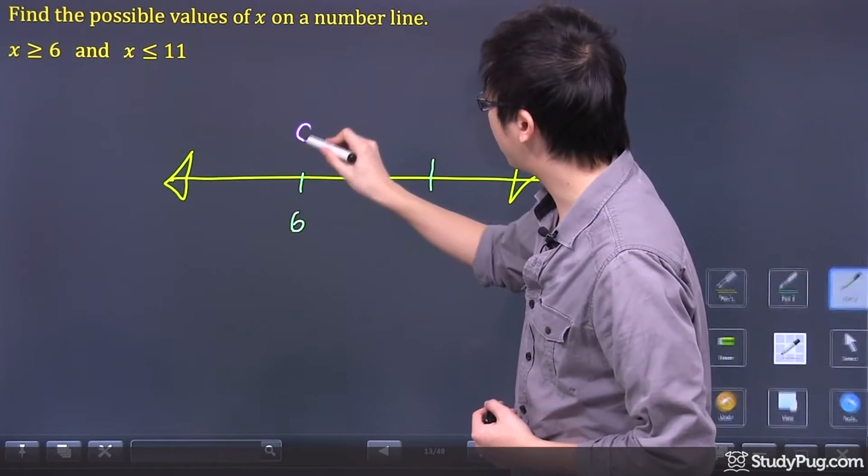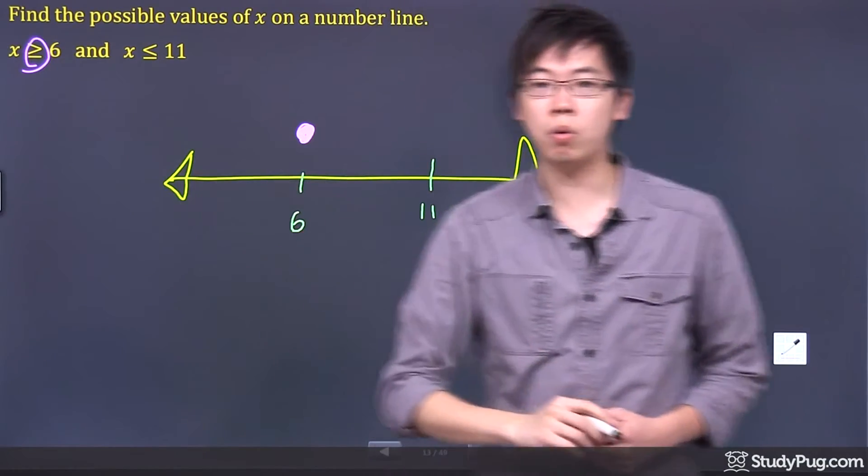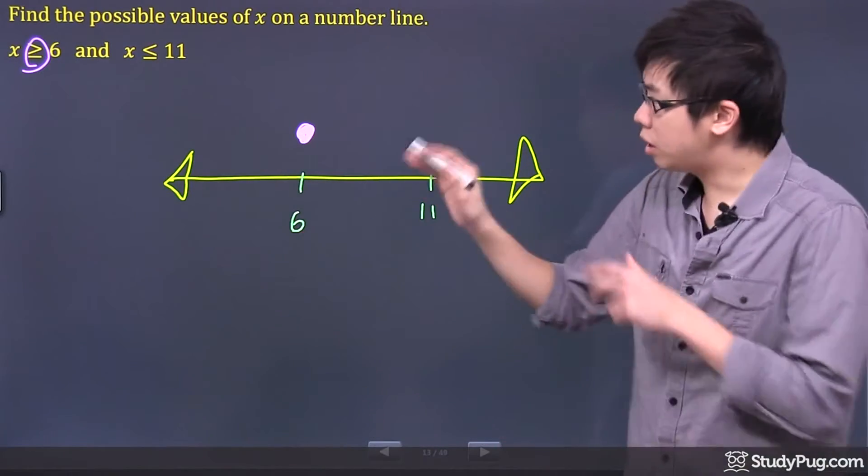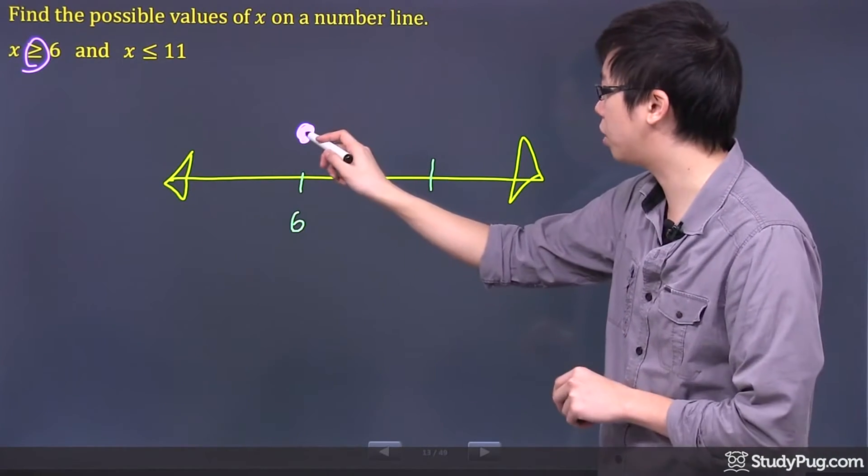So I'm going to put a closed dot right on top of the 6, and the reason I put a closed dot is because it says greater than or equal to. Now we know the number, it's the x, which is represented by my number line here, the purple number line here.